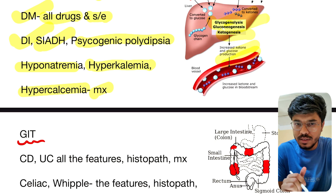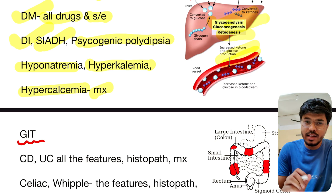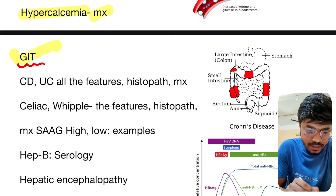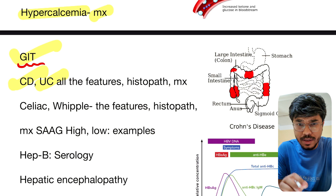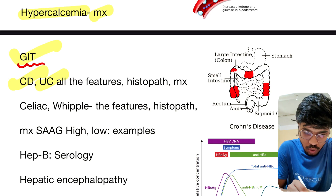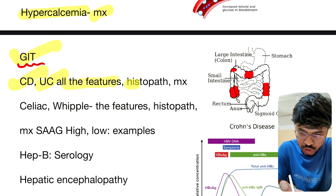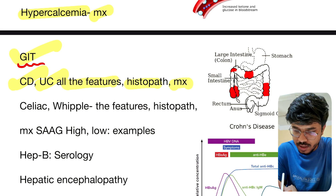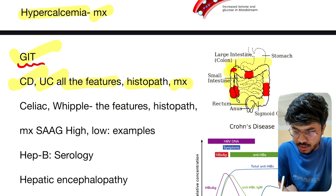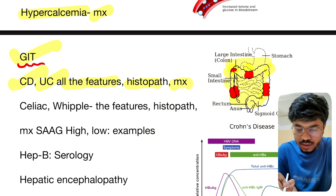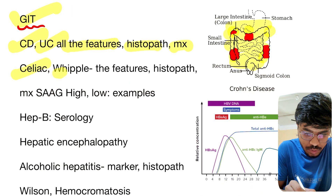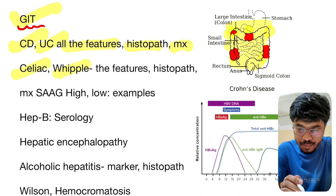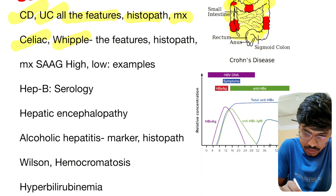From GIT: Crohn's disease and ulcerative colitis — very very important, all the features, histopathology, and management. In Crohn's disease, skip lesion is present. Celiac disease and Whipple disease — again important topics; the features, histopathology, and management.